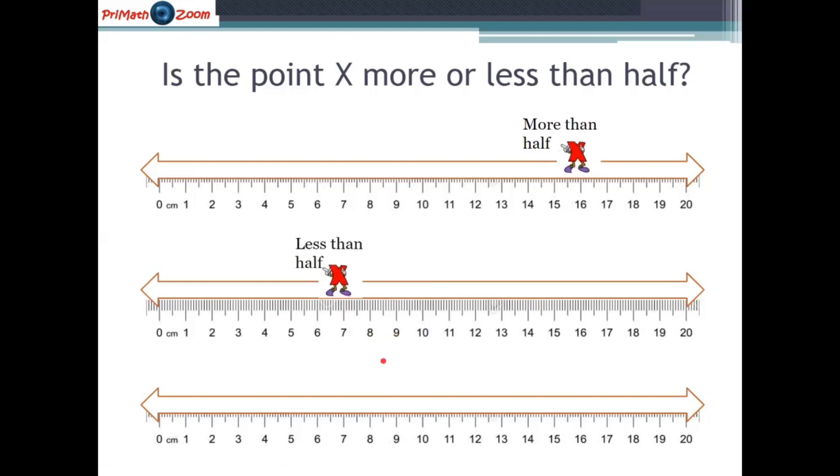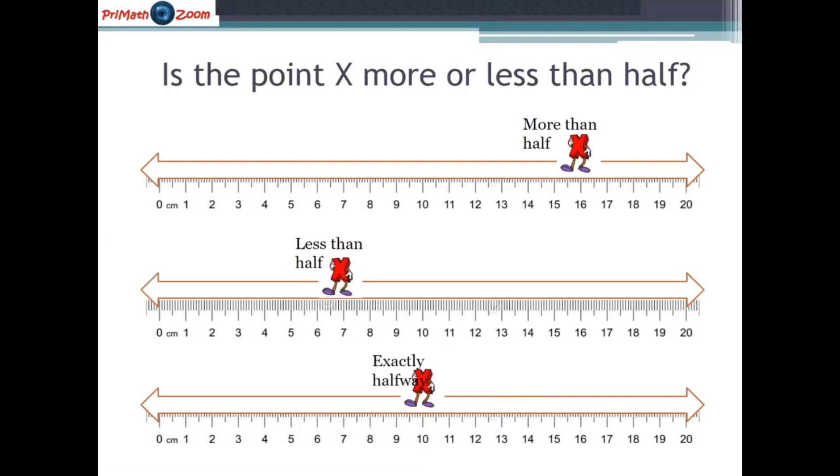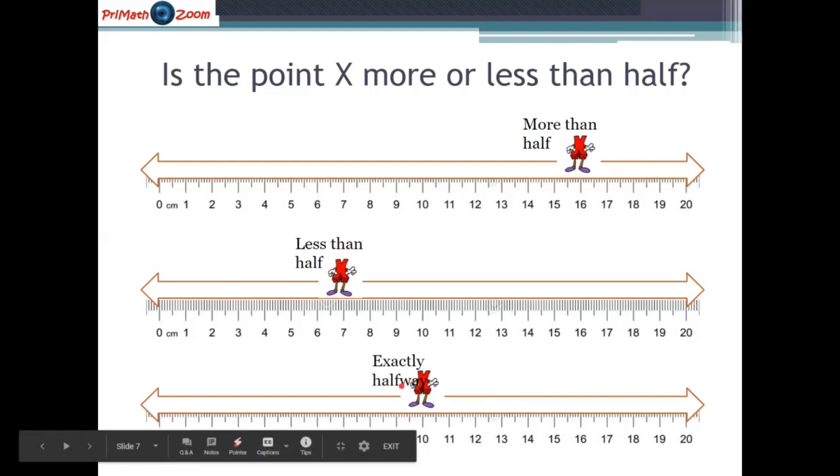Now let us think about this other one. We know because we have been working with this ruler that we're dealing with the zero points and the 20 points and halfway along this ruler will be 10 centimeter. Wow. The X is at the 10 centimeter. That means yes, the X is neither less than half or more than half. It is exactly halfway along the ruler.